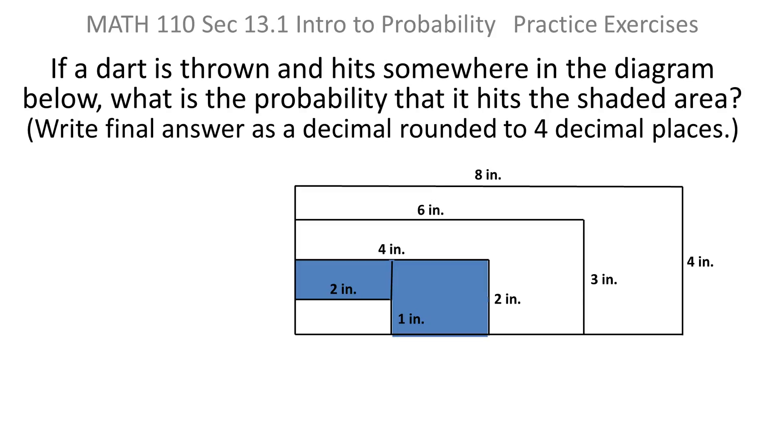If a dart is thrown and hits somewhere in the diagram below, what is the probability that it hits a shaded area? And in the end, we want to write our final answer as a decimal rounded to four decimal places.